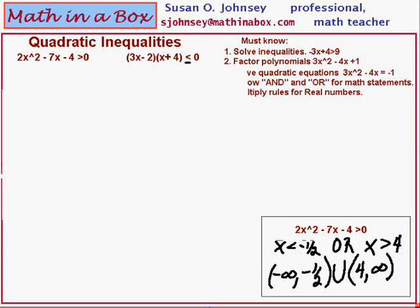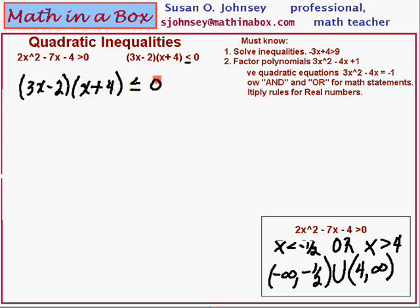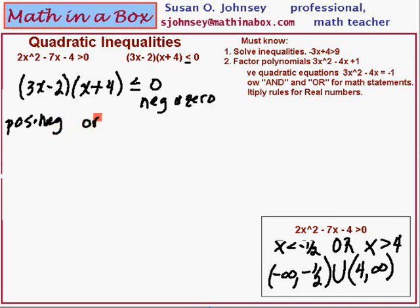Let's look at the second problem, which is already written in factored form for us, with zero on the right side. You must have both — zero on the right and the expression in factored form, as studied when solving quadratic equations. In this problem we have less than or equal to zero, meaning we want the expression to be negative or equal to zero. When multiplying two things, we need a positive times a negative, or a negative times a positive.